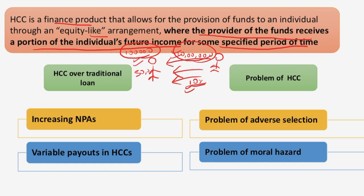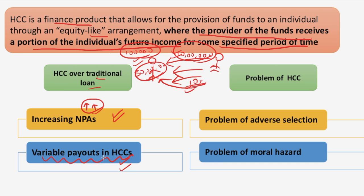If you earn 50,000 then 10% of 50,000 will be your payout. Comparing this with traditional loans, wherein you must pay out the loan at a pre-specified interest rate along with the principal amount no matter what, there were increasing NPAs because students take loans and are unable to repay them. But with HCC there will be variable payouts based upon your future income for a specified period of time, and thereby NPAs will fall. So far we have discussed how HCC is better over the traditional loan and the mechanism for taking HCCs.